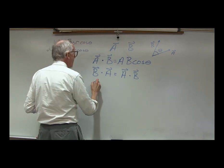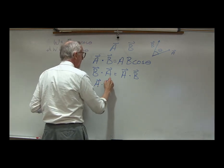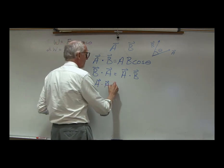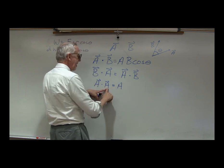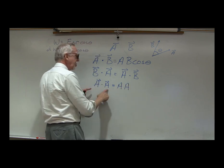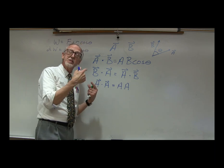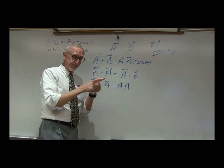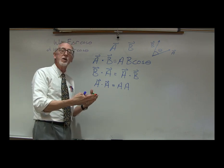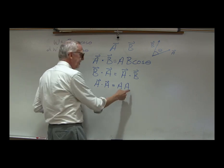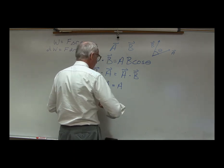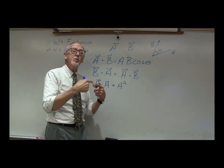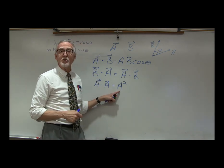What is A·A? If we take a vector A and dot it into itself, we get the magnitude of the first times the magnitude of the second times the cosine of the angle between them. But the angle between A and A is zero, and cosine of zero is one. So it's just A times A — in other words, A squared. If we take the dot product of a vector into itself, we get its magnitude squared.